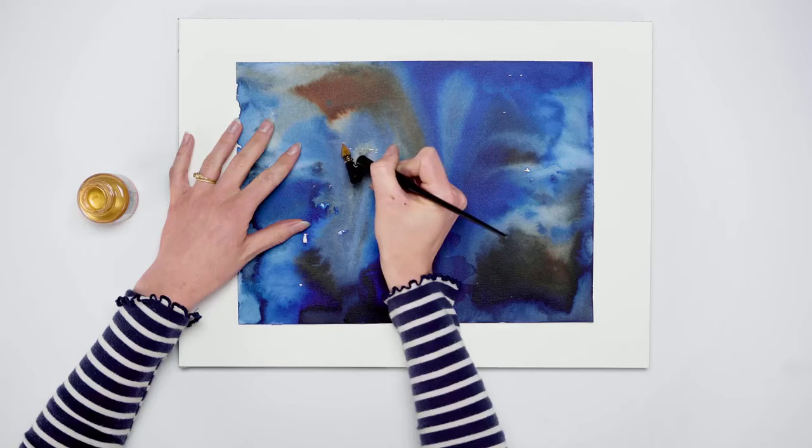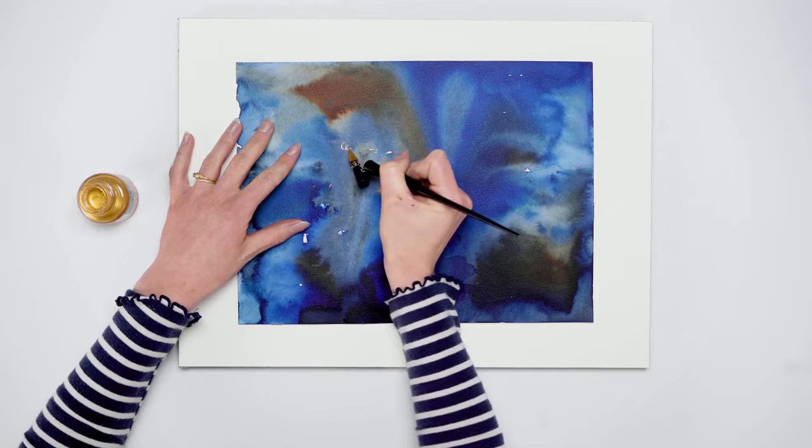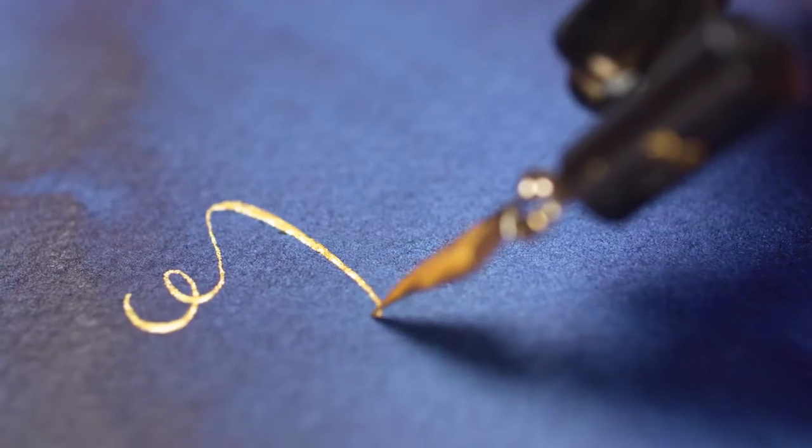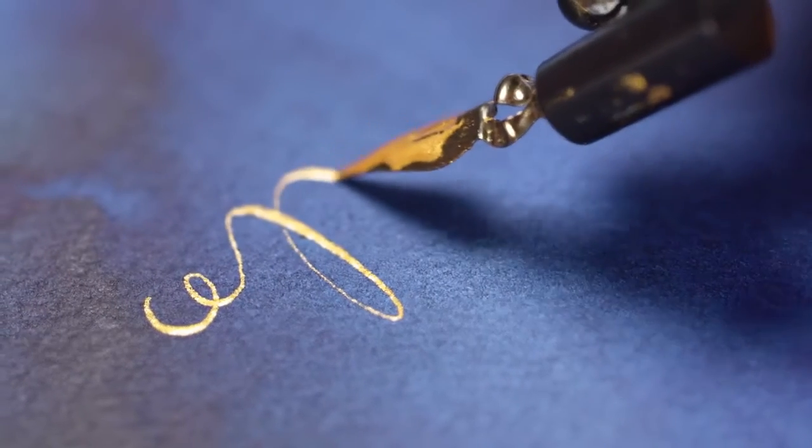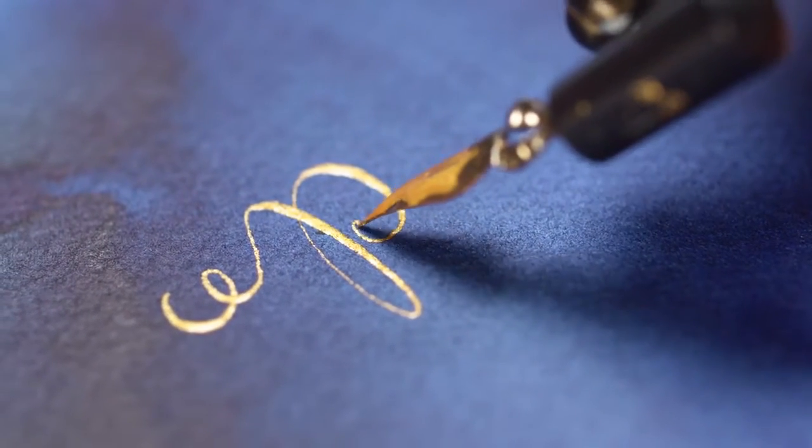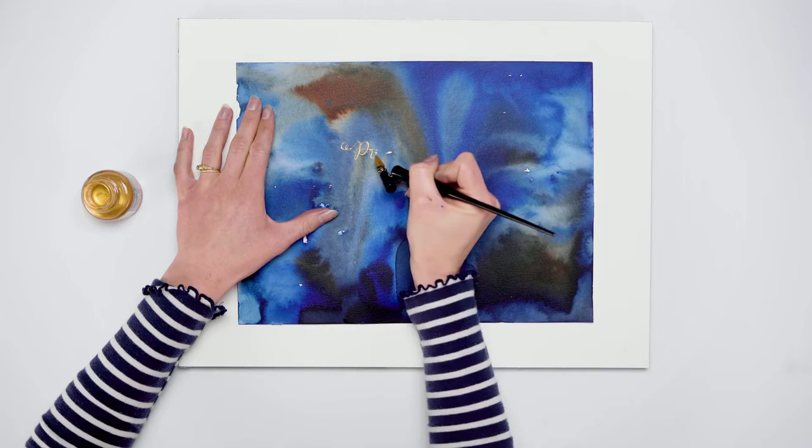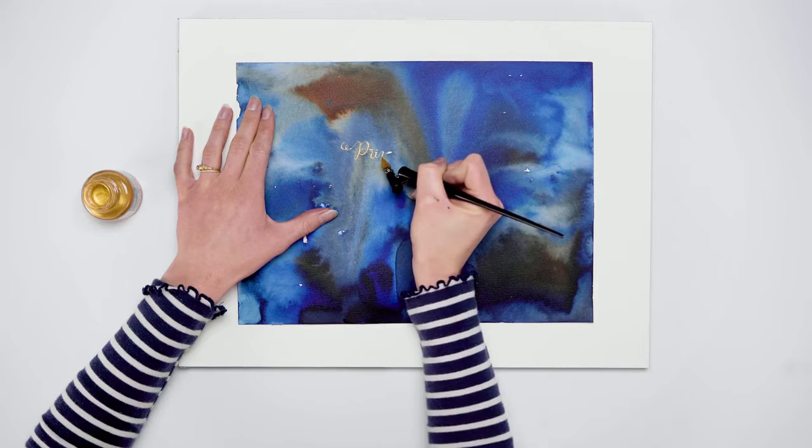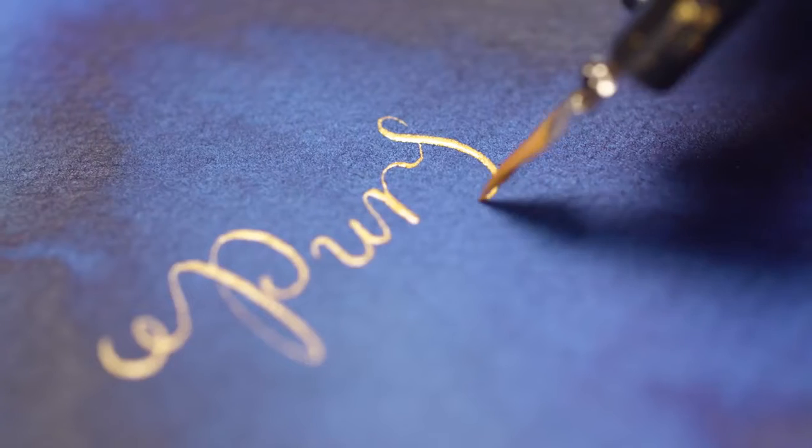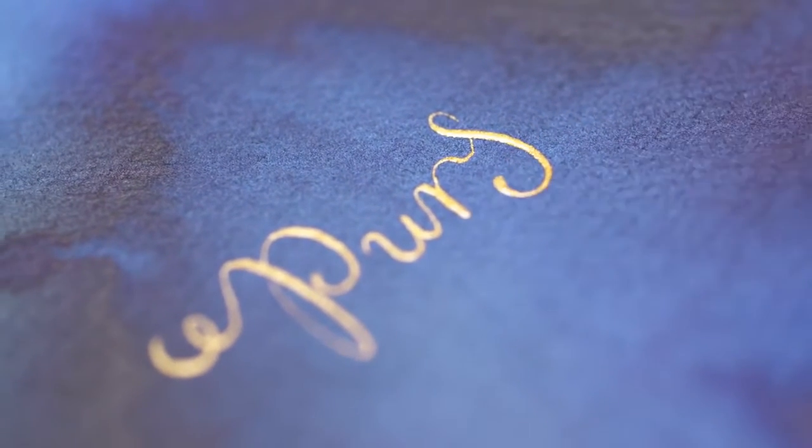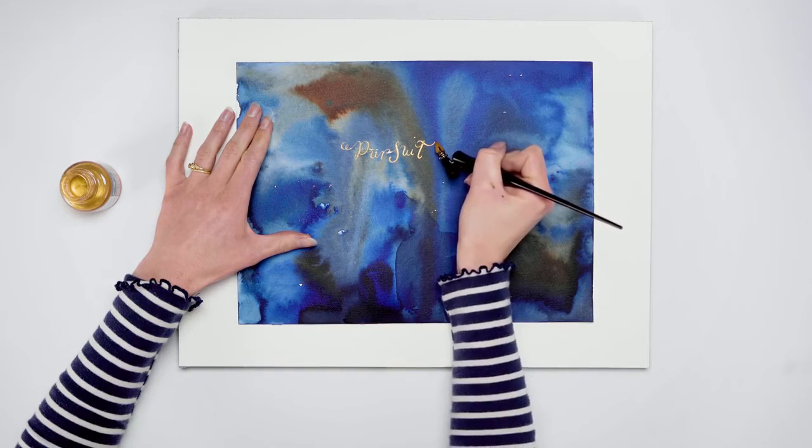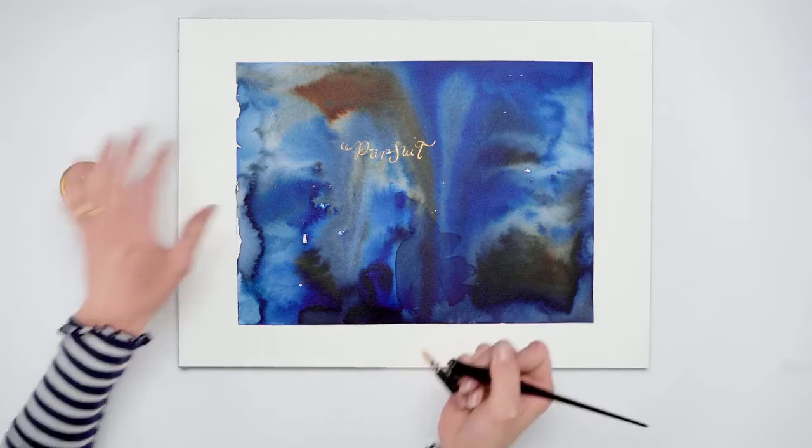I'm starting with the P stem, then building the ascender with a curling flourish. The letters U-R-S can be written with a single stroke, and finish the word with a flourish on the cross stroke of the T.